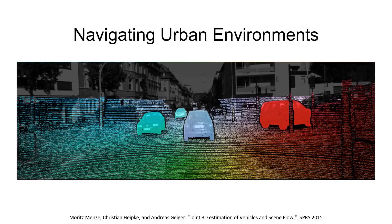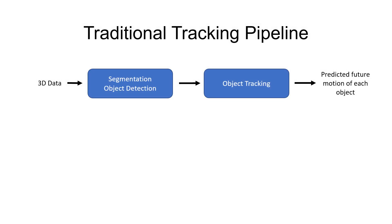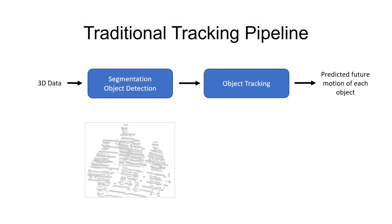When interacting with highly dynamic environments, like those found in autonomous driving, it is crucial to track the position and velocity of objects in the scene in order to better predict their future motions. This is traditionally done using a segmentation-based pipeline.